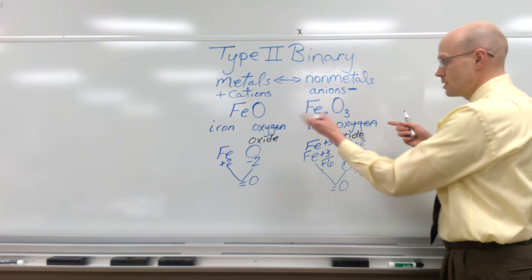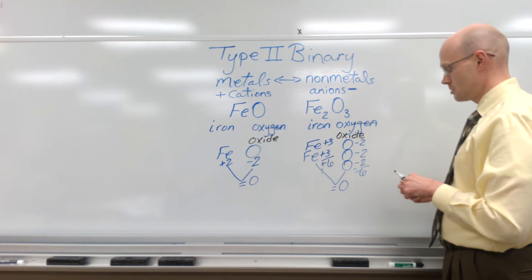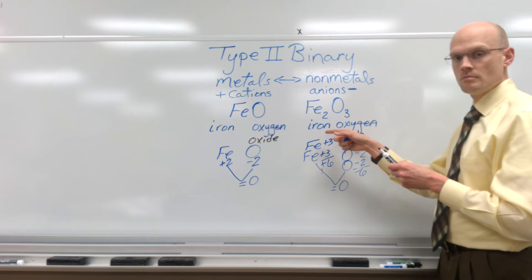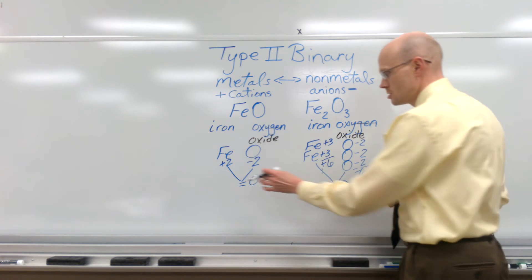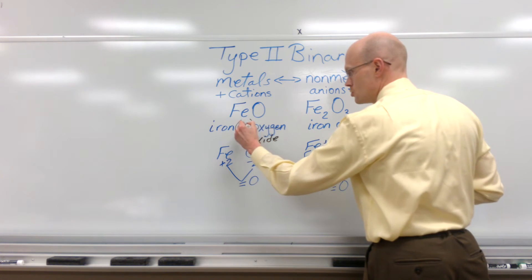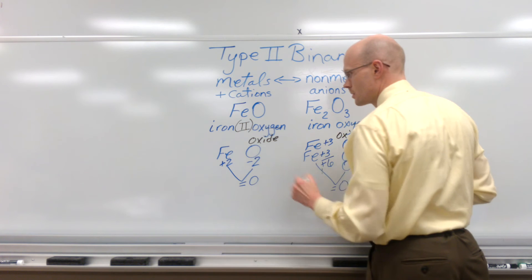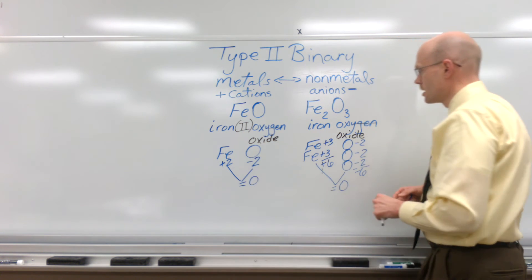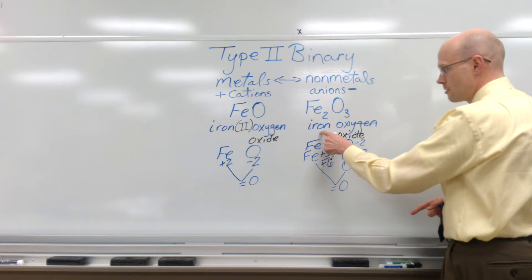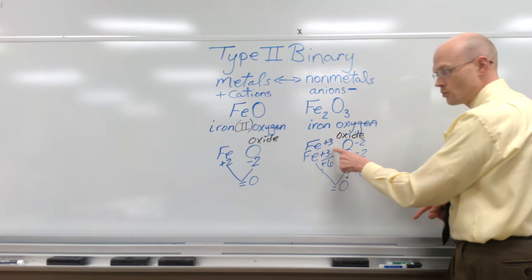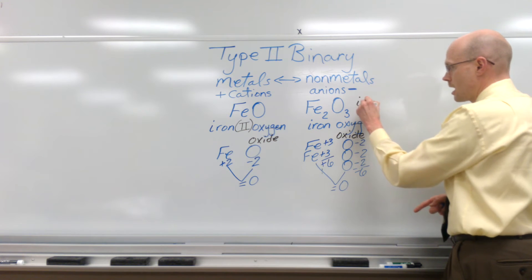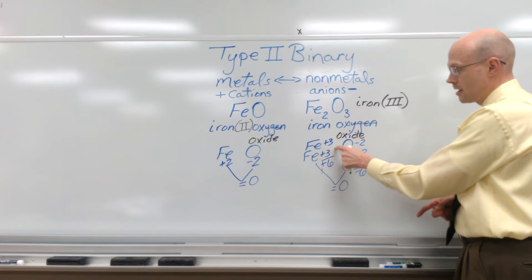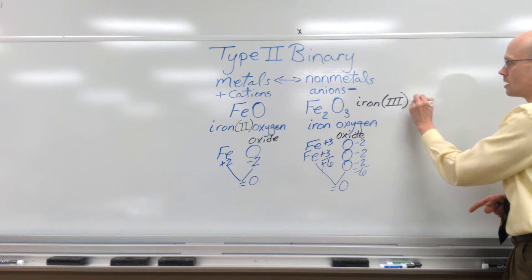To differentiate the names of these two compounds, we use their charge so we can recognize which iron is present. We use Roman numerals to represent the charge in the name. So FeO is iron(II) oxide — Roman numeral II for the +2 charge — and Fe₂O₃ is iron(III) oxide — Roman numeral III to represent the +3 charge on each individual iron cation.